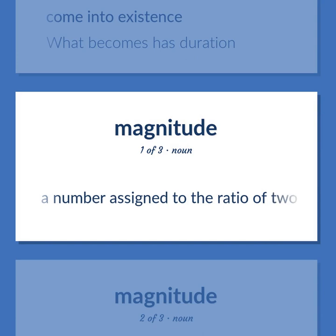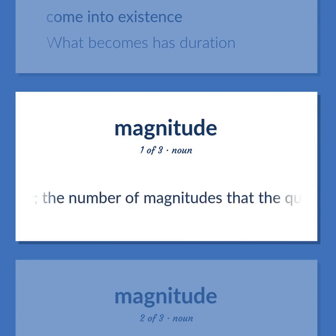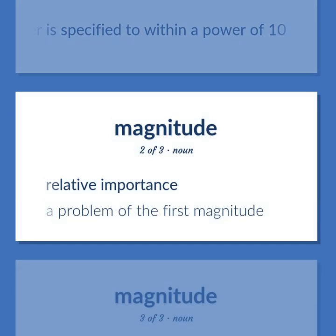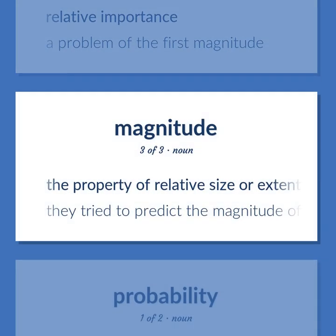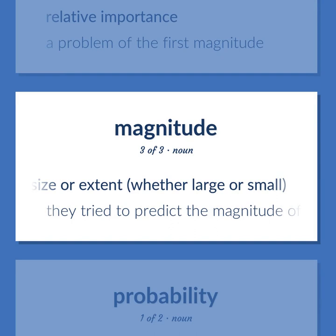Magnitude: A number assigned to the ratio of two quantities; two quantities are of the same order of magnitude if one is less than ten times as large as the other; the number of magnitudes that the quantities differ is specified to within a power of ten. Relative importance — a problem of the first magnitude. The property of relative size or extent, whether large or small — they tried to predict the magnitude of the explosion.